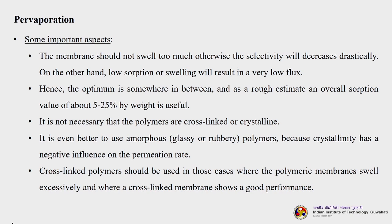Some important aspects of pervaporation: the membrane should not swell too much, otherwise selectivity will decrease drastically. On the other hand, low sorption or swelling will result in a very low flux. The optimum is somewhere in between, and as a rough estimate, an overall sorption value of about 5 to 20 percent by weight is useful. It is better to use amorphous glassy or rubbery polymers because crystallinity has a negative effect on the permeation rate. Cross-linked polymers should be used only where the membrane swells excessively.